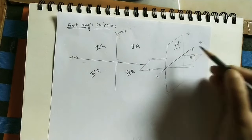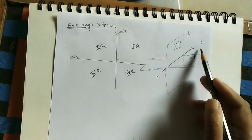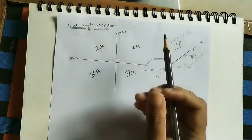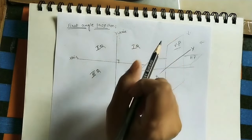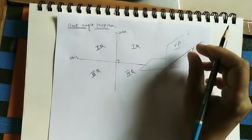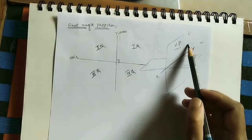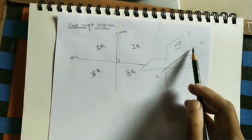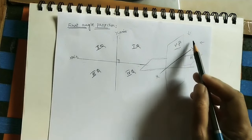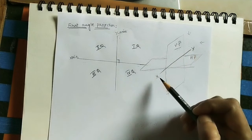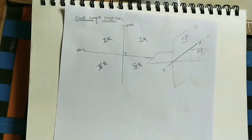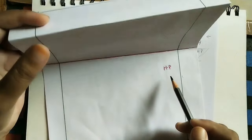XY is the reference line. In first angle projection, whatever objects are given, we keep them in the first quadrant. So in 3D form also we are keeping the object in the first quadrant. The position of the object is defined as: the object is above the horizontal plane and in front of the vertical plane, so that object is in the first quadrant.